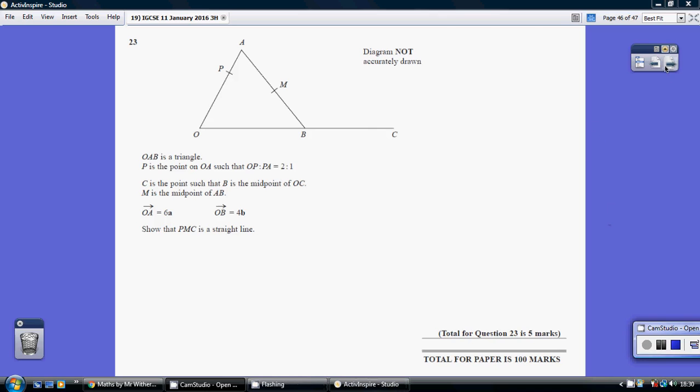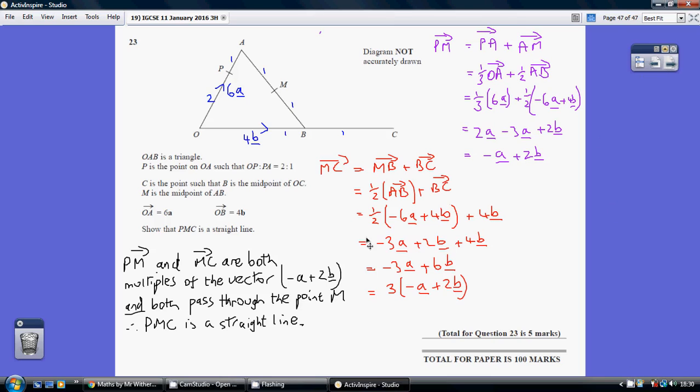Question 23. We need to prove that PMC is a straight line. To do this, you're going to work out the vector PM and the vector MC and show that they are parallel. In other words, they are multiples of the same vector. That will prove they are parallel and then you just make the point. They both go through the point M and that means they must be on a straight line. So, first things first, let's work out the vector PM.